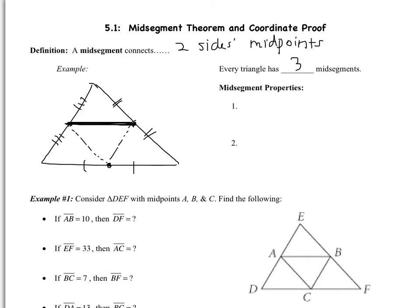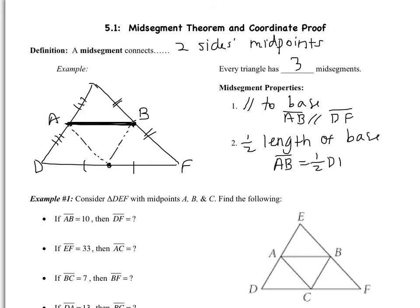The midsegment has two very important properties. It is parallel to the base, and it's half the length of the base. So if this was our segment AB and this was the base DF, we know that AB would be parallel to DF. And we know that AB is going to be half the length of whatever DF is. So if DF is 20, then AB is going to be 10.